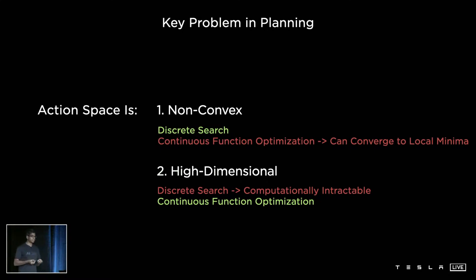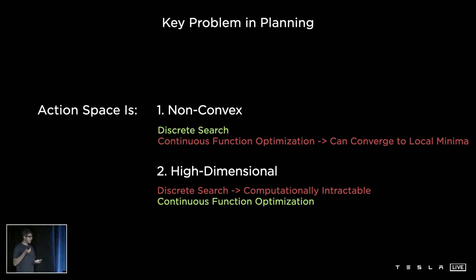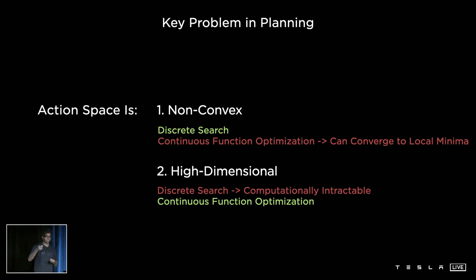Discrete search methods are really great at solving non-convex problems because they don't get stuck in local minima, whereas continuous function optimization can easily get stuck in local minima and produce poor solutions. On the other hand, for high-dimensional problems, discrete search struggles because it doesn't use any gradient information — it has to literally explore each point to know how good it is, whereas continuous optimization uses gradient-based methods to very quickly arrive at a good solution.